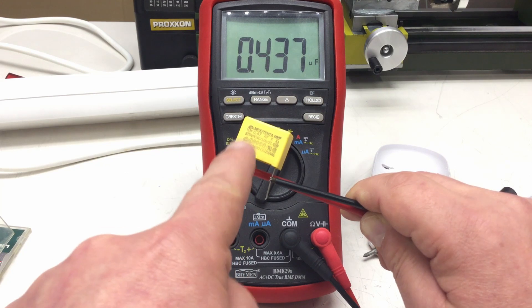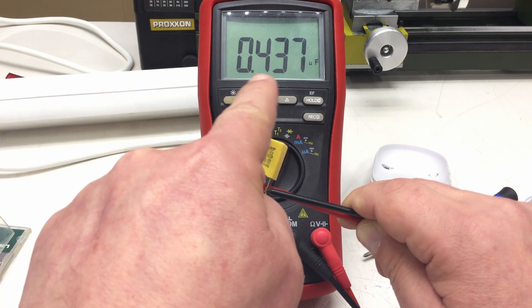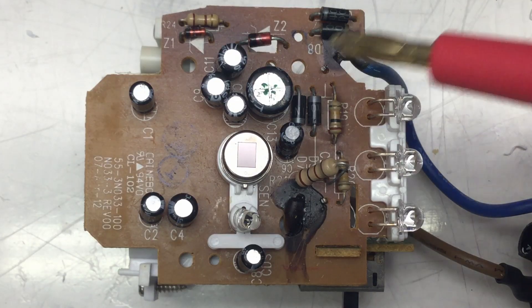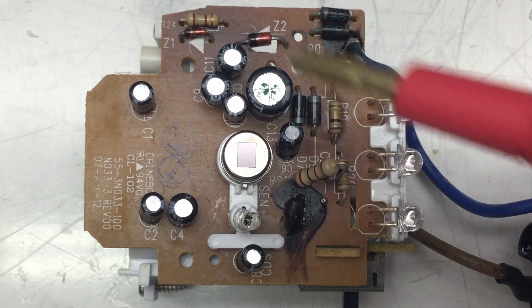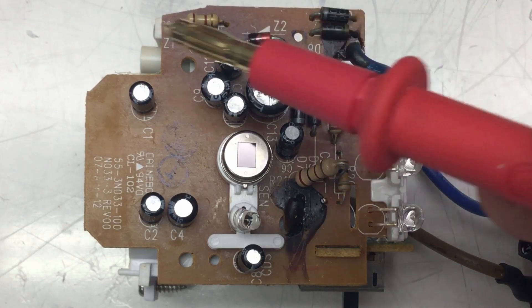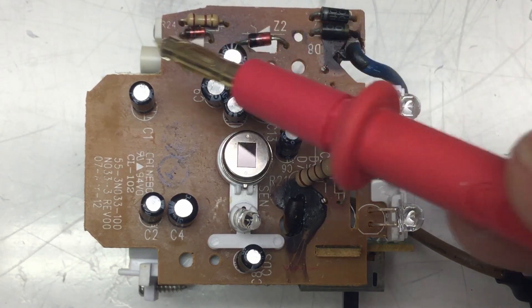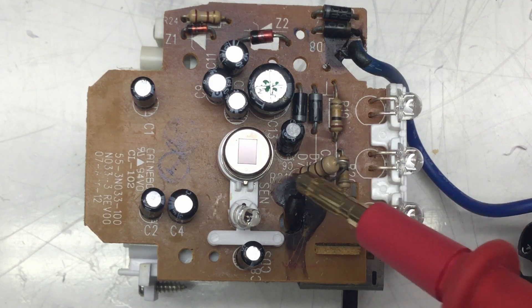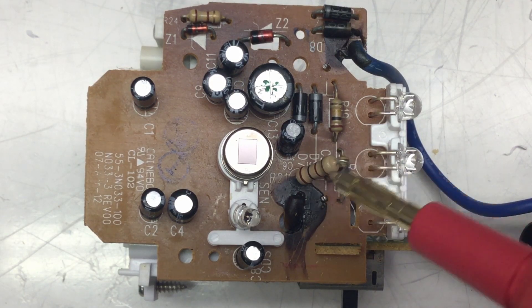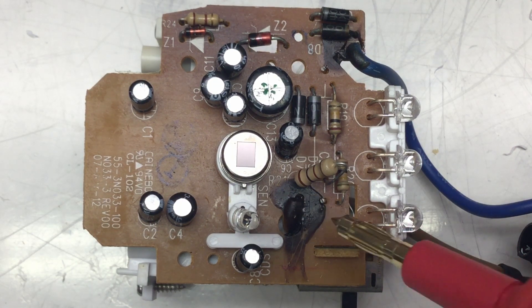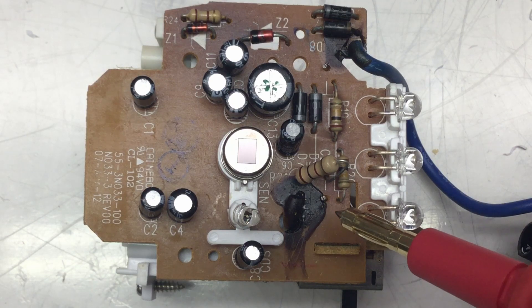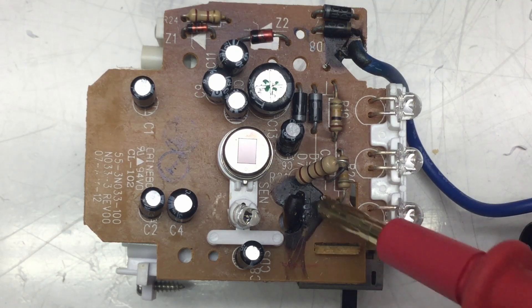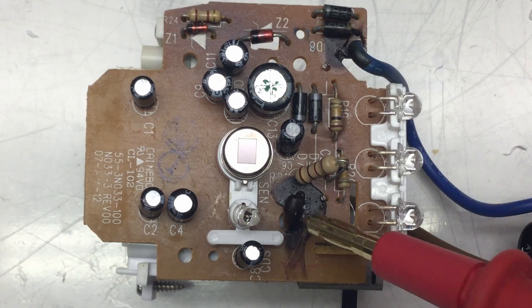Turns out that capacitor is still perfectly fine with 0.437 microfarads. So that didn't kill the thing. I probed the rectifier diodes and the zener diodes, at least if they are still conducting. And they are with 0.6 volts, what you would expect. And I also checked that inrush, I guess it's a 100 ohm limiting resistor here directly connected to mains AC.